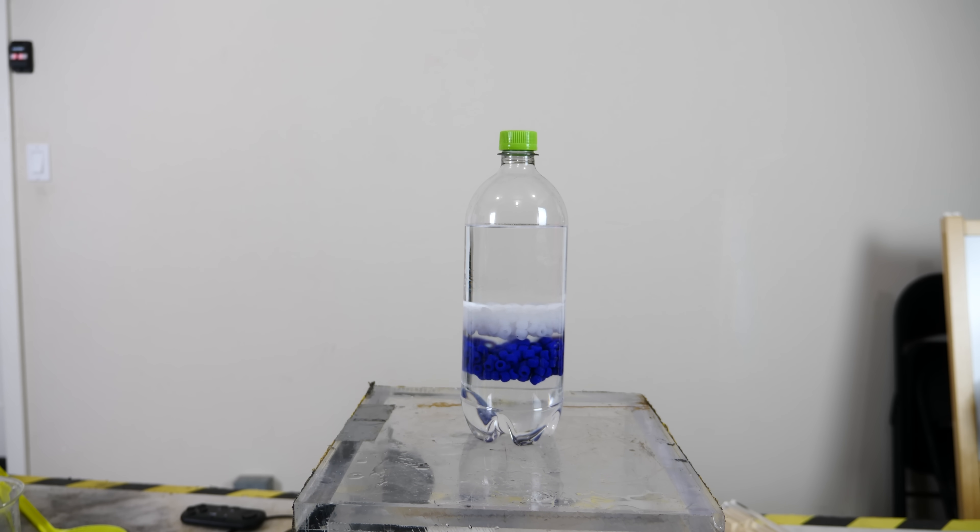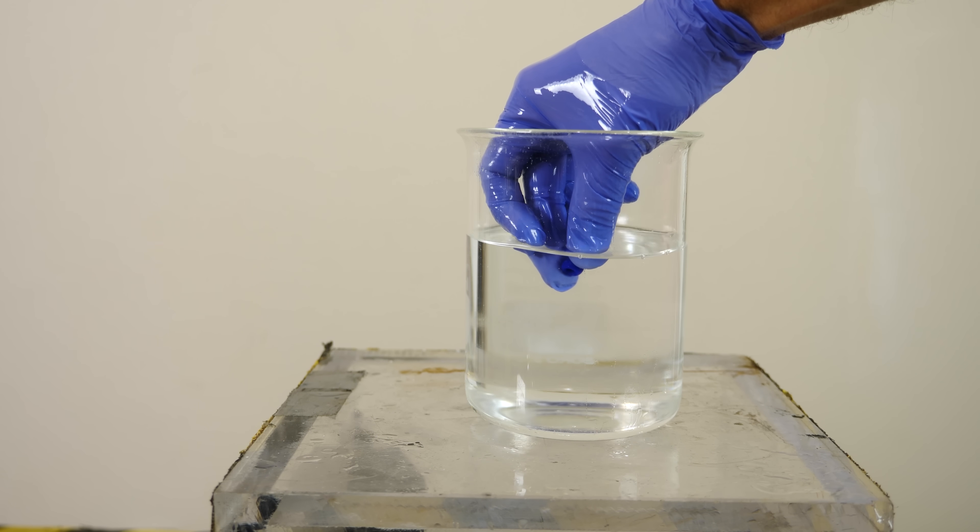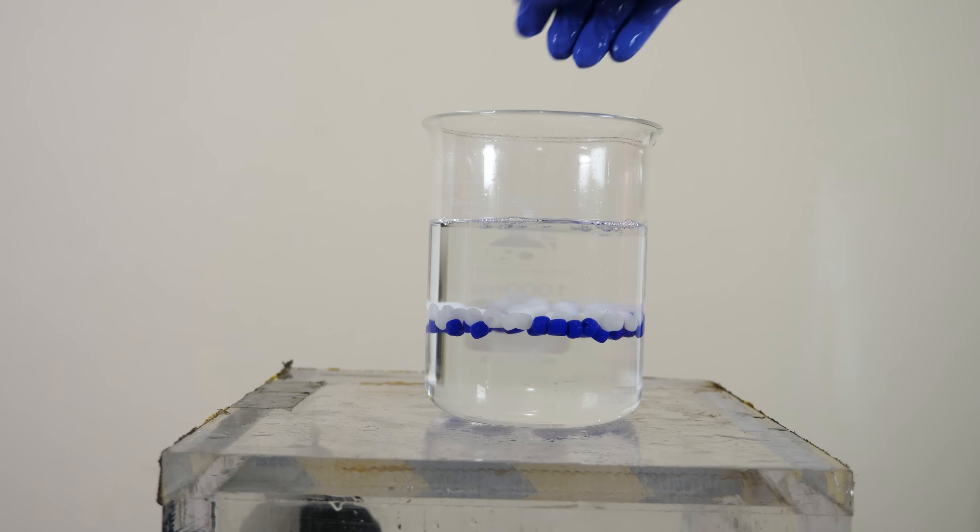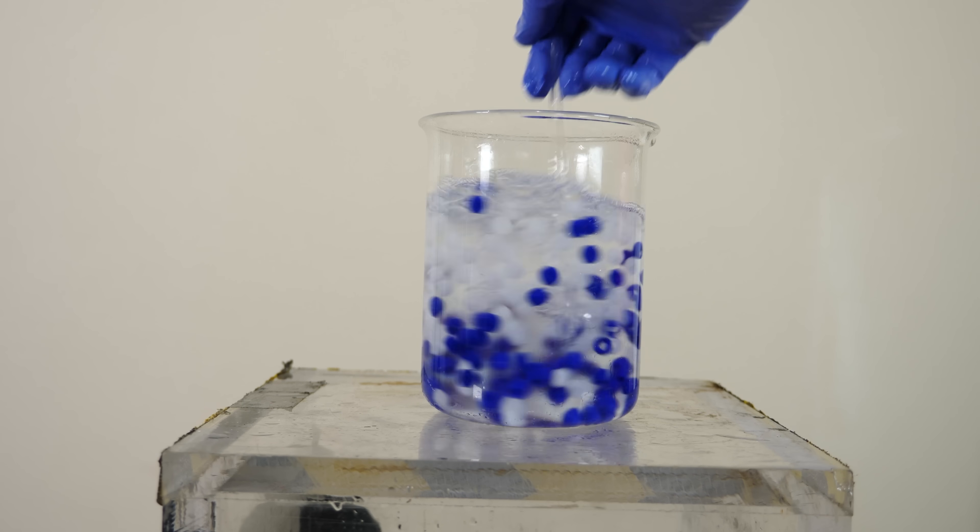So how is this liquid able to sort the beads like this? Well, we can see what's going on a little bit clearer here when I just have the liquid without shaking it first, and I drop the beads in. You can see they both settle at the center, but then when I mix it up, they separate.